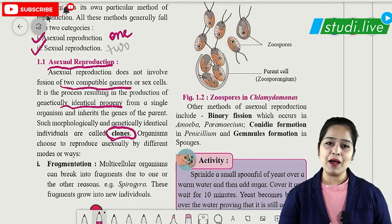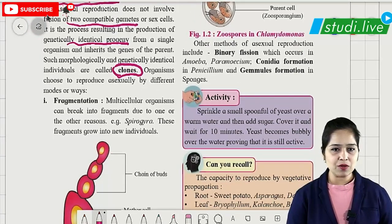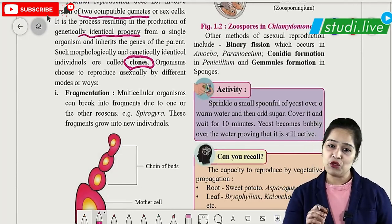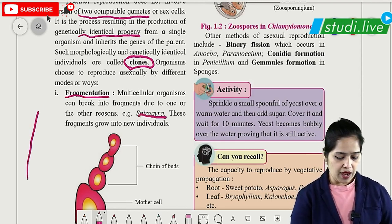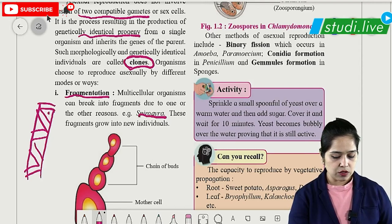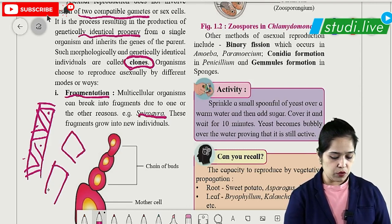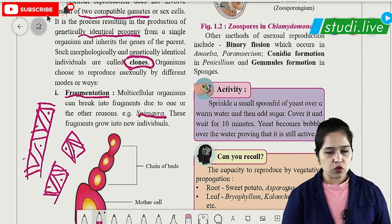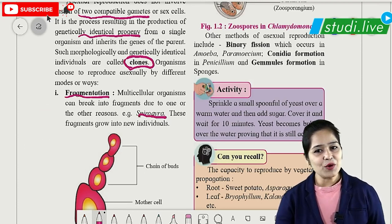The first method of asexual reproduction in lower organisms is fragmentation, which is shown by Spirogyra. Examples are very important for exams. In fragmentation, the big filament of Spirogyra breaks into fragments, and each fragment develops into a new Spirogyra. So the body divides and each individual fragment forms a new organism.